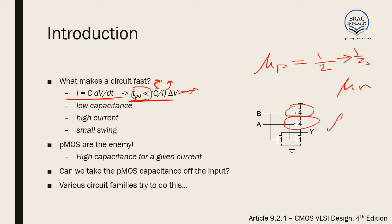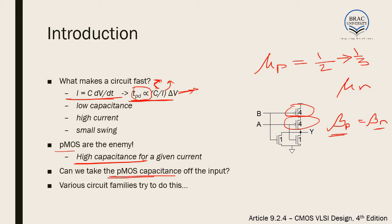So what happens if we want to make β_p equal to β_n? We make the width of PMOS almost twice the width of NMOS. Since the width of PMOS increases, the capacitance of the PMOS also increases. That is, the high capacitance for a given current is brought about because of the PMOS circuits. One way to decrease the propagation delay could be decreasing the capacitance, and that can be done by taking the PMOS out of the input. There are some circuit families that can do this.